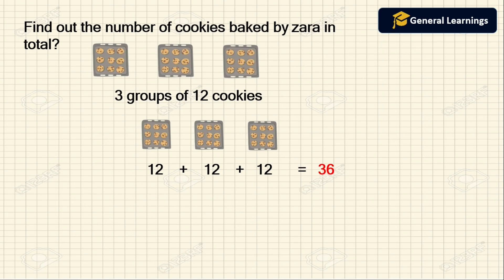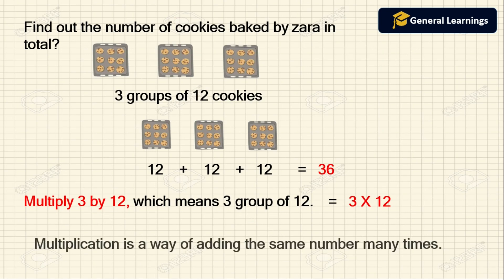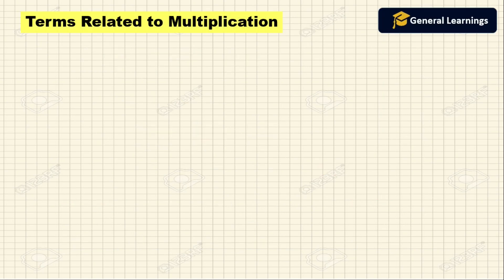But there is another way to write this: you can multiply 3 by 12, which means three groups of 12. You can write this as 3 into 12. So multiplication is nothing but a way of adding the same number many times. Next we are going to see the terms related to multiplication.